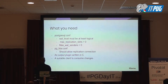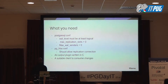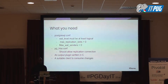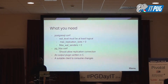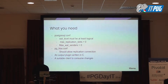What do you need to make this happen? First, you need to change some configuration in your postgresql.conf file. You need to increase max_wal_senders, increase the number of replication slots, and set wal_level to logical. In your pg_hba.conf, you need to allow replication connections depending on the interface you are using. You also need an output plugin written in C and a suitable client to consume those changes.